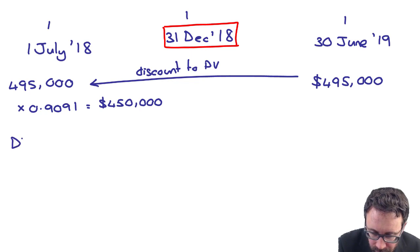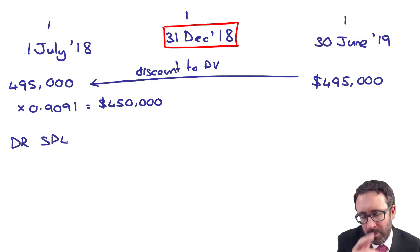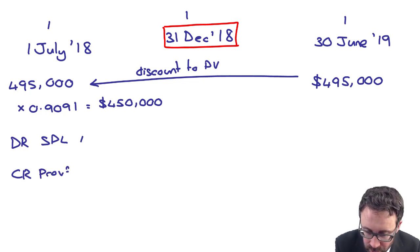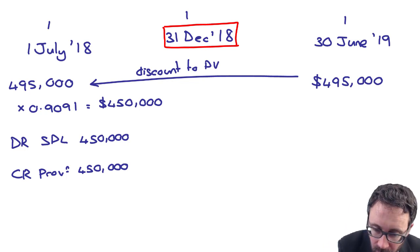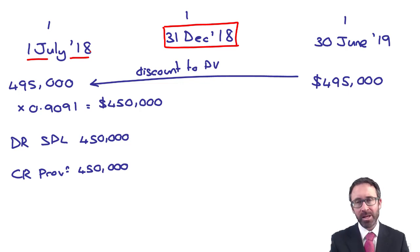So what we do is debit your statement of profit or loss — yes, it's an expense — and credit the provision with $450,000. That is what we've recognised at the 1st of July 2018. The expense in profit or loss goes through your operating expenses. We've discounted it back because it's materially different.